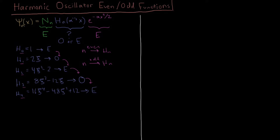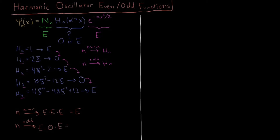This is very useful because for psi of n, if n is even, then the normalization constant is even, H of n is even, and the Gaussian is even — so if n is even, our entire wave function is even. If n is odd, the normalization constant is still even, the Hermite polynomial is odd, and the Gaussian is still even. Even times odd is odd, and odd times even is again odd. So our total wave function is either completely even or completely odd, depending on which value of n we have.